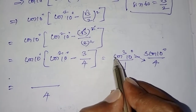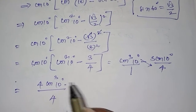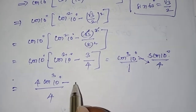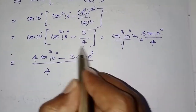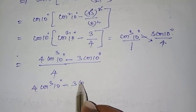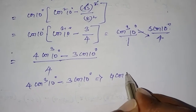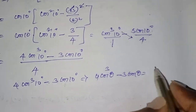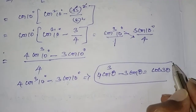Taking LCM as 4 and cross-multiplying: 4 cos cubed 10 degrees minus 3 cos 10 degrees, all divided by 4. Observe the numerator: 4 cos cubed 10 degrees minus 3 cos 10 degrees.